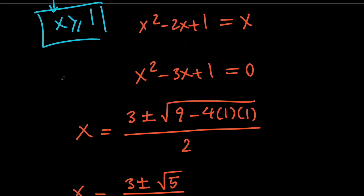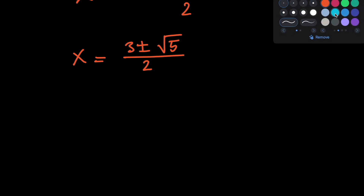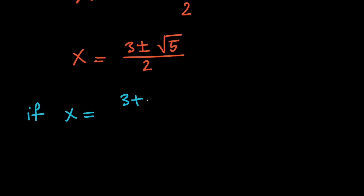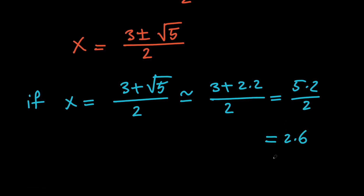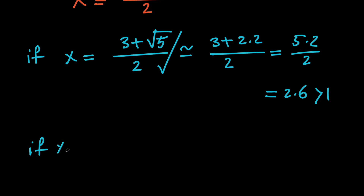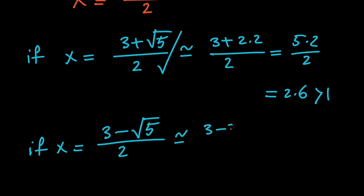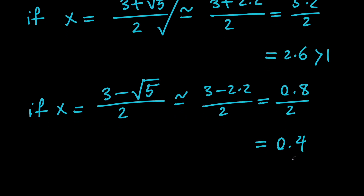But notice that x must be greater than or equal to 1. So let's see if these values satisfy that. If x equals (3 plus root 5) divided by 2, that's approximately 5.2 divided by 2, which equals 2.6. And 2.6 is greater than 1, so this is a valid solution. But if x equals (3 minus root 5) divided by 2, that's approximately 3 minus 2.2 divided by 2, which equals 0.8 divided by 2, which equals 0.4. And 0.4 is not greater than 1, therefore this is not a valid solution.